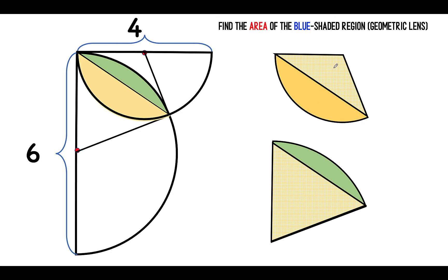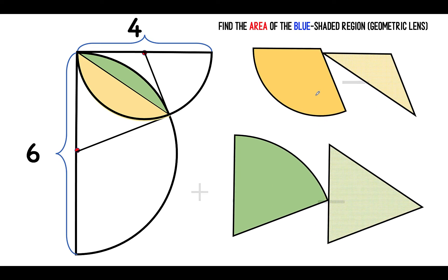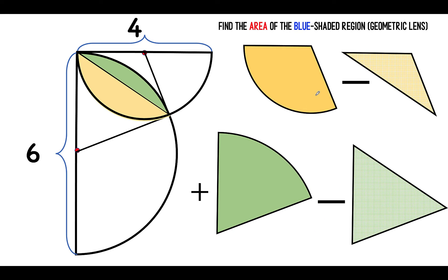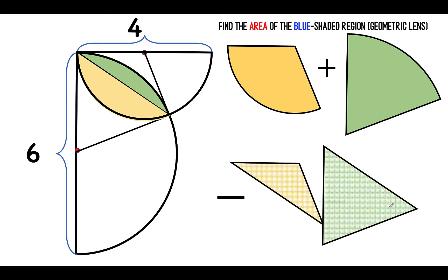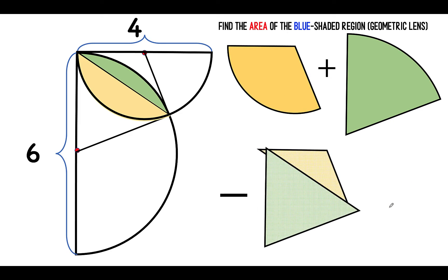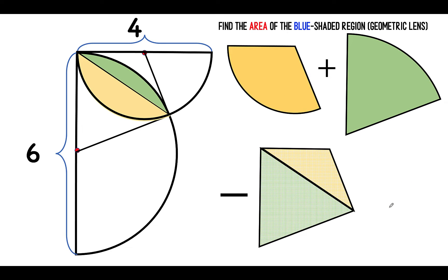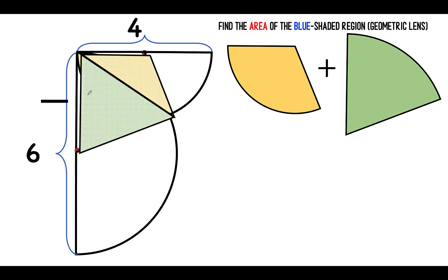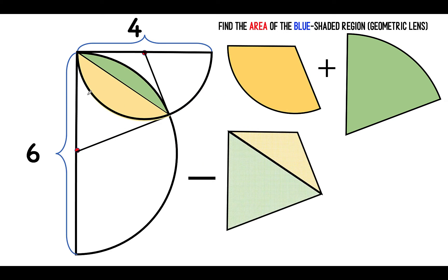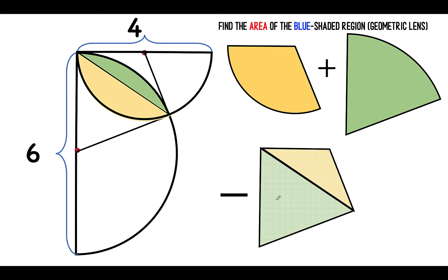So that means we need to find the area of these four geometric figures. But notice that if we combine these two triangles, their combined area would be equal to this shape here. In other words, the area of the two triangles is the area of the kite itself.